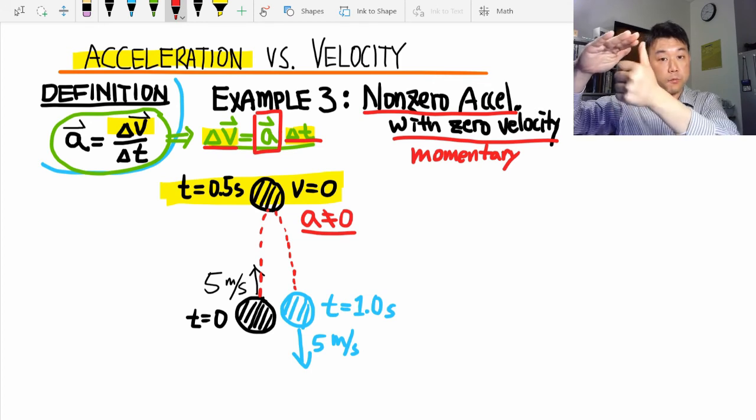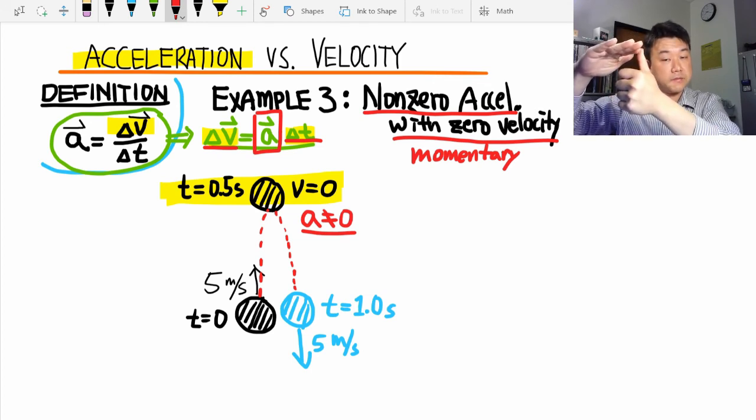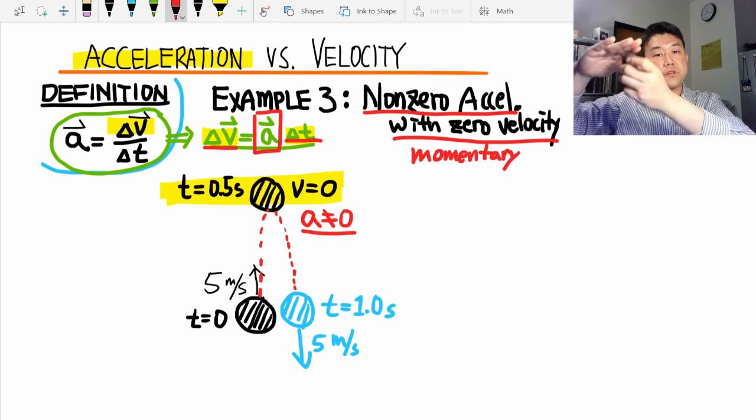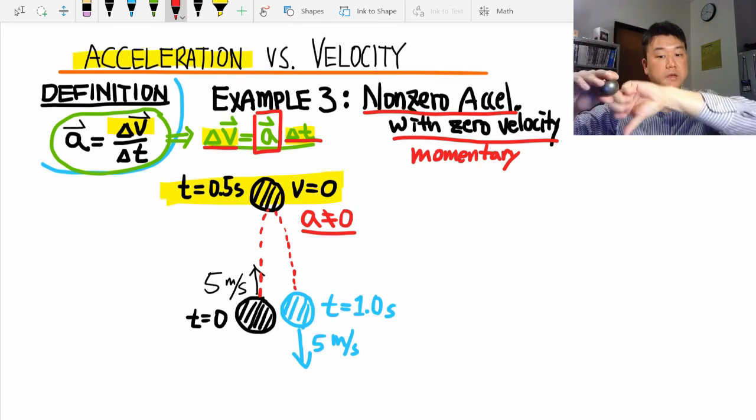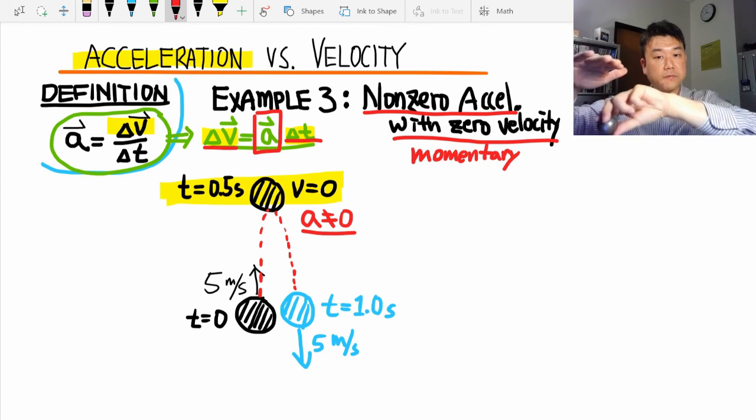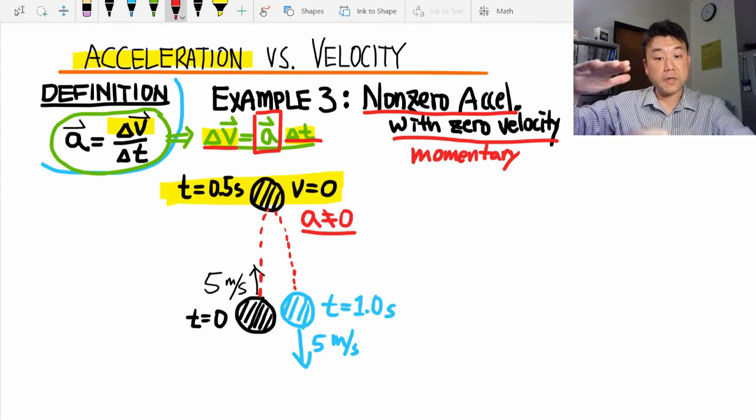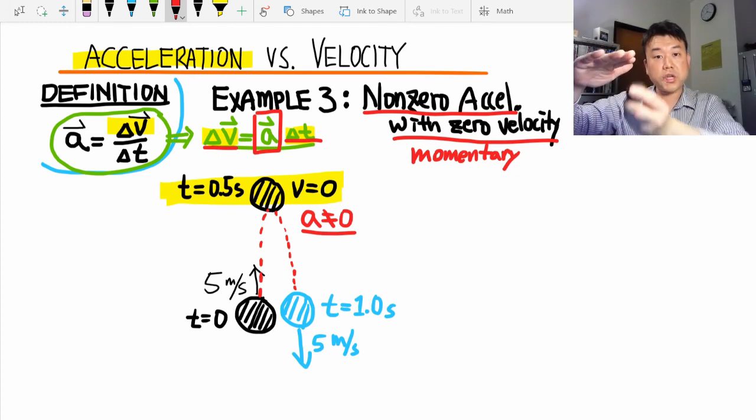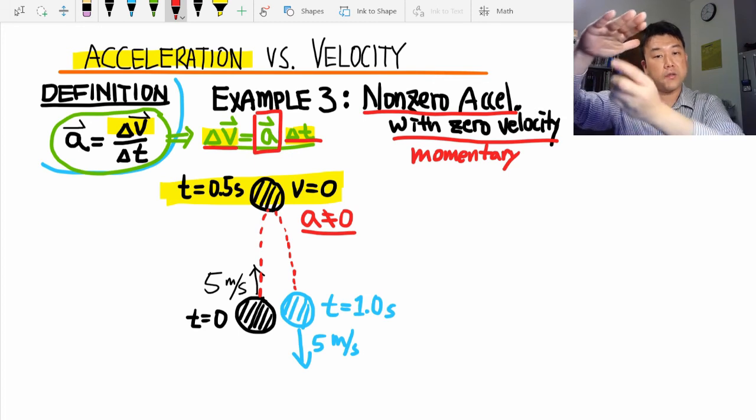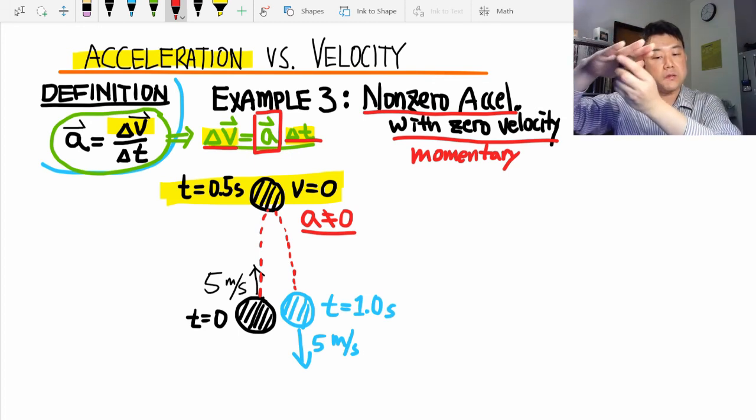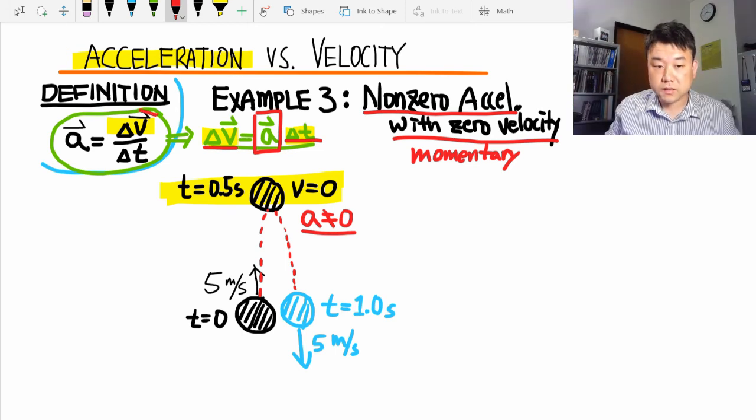So because of that continuous change in velocity, I know even at the very top, the velocity is still changing. And because this velocity is changing, that means acceleration is not zero at the top. So these are some examples distinguishing between acceleration and velocity. And I hope this is giving you enough concrete examples for you to be able to distinguish between these two things, acceleration and velocity, in your own thinking.